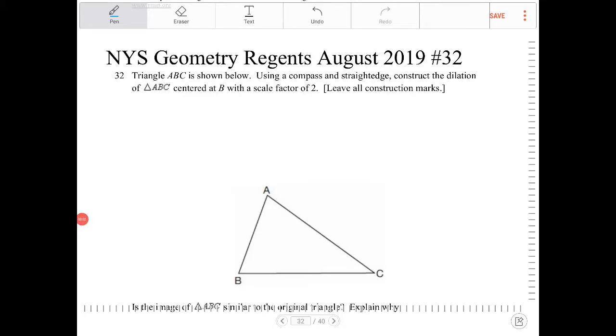Triangle ABC is shown below. Using a compass and straight edge, construct the dilation of triangle ABC, centered at B with a scale factor of 2. Leave all construction marks.